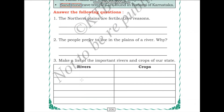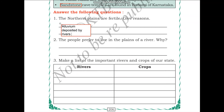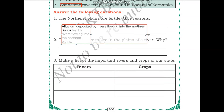Question: The northern plains are fertile - give reason. The main reason is that rivers bring in alluvium and deposit it into the northern plains, making the soil very fertile. So the answer is: alluvium deposited by rivers flowing into the northern plains makes them very fertile.